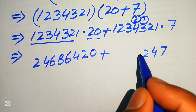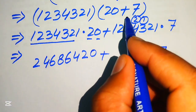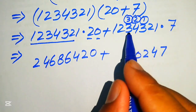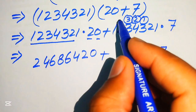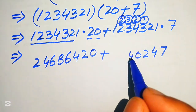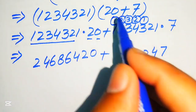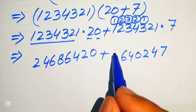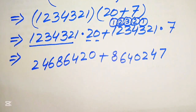Computing 7 times 1234321: 7 times 1 is 7; 7 times 2 is 14, write 4 carry 1; 7 times 3 is 21 plus 1 is 22, write 2 carry 2; 7 times 4 is 28 plus 2 is 30, write 0 carry 3; 7 times 3 is 21 plus 3 is 24, write 4 carry 2; 7 times 2 is 14 plus 2 is 16, write 6 carry 1; 7 times 1 is 7 plus 1 is 8.